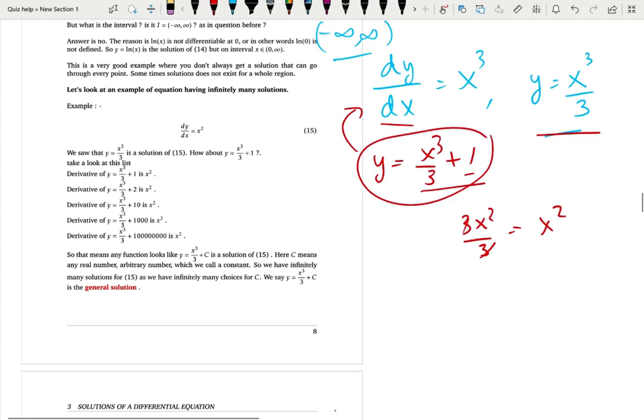So the derivative here is actually x square. Oh this should be x square, my bad. All right, so wait a minute, left hand side is x square, left hand side is x square. So x cube over 3 plus 1 is also a solution, not only x cube over 3. It is also valid from negative infinity to infinity, right? You can use any x value without a problem.